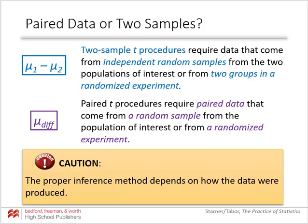If you are trying to determine whether to use a two-sample procedure or a paired procedure, pay attention to how the data were produced. If you have random samples from two separate populations or two groups in an experiment, use the two-sample t procedure. If your data gives you two measurements from the same individual, or you can pair individuals based on a specific characteristic, then you use a paired t-test. Let's look at a couple of scenarios to decide which method applies.